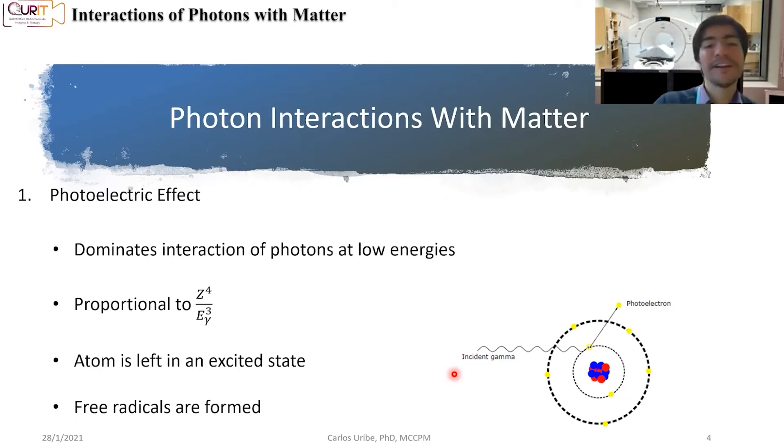Photoelectric effect dominates the interaction of photons at low energies. This is the main effect at low energies. How does it depend on the material? It's proportional to Z to the 4 of that material and is inversely proportional to the cube of the energy of the initial photon.